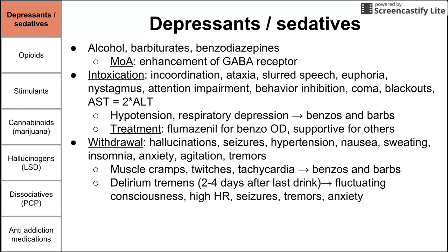Delirium tremens is a group of symptoms that we see 48, 72, sometimes 96 hours after the last drink. That includes fluctuating consciousness, high heart rate, seizures, anxiety, and tremors. That's a sign of withdrawal — a serious sign of withdrawal. It's important to note that these seizures can be fatal.